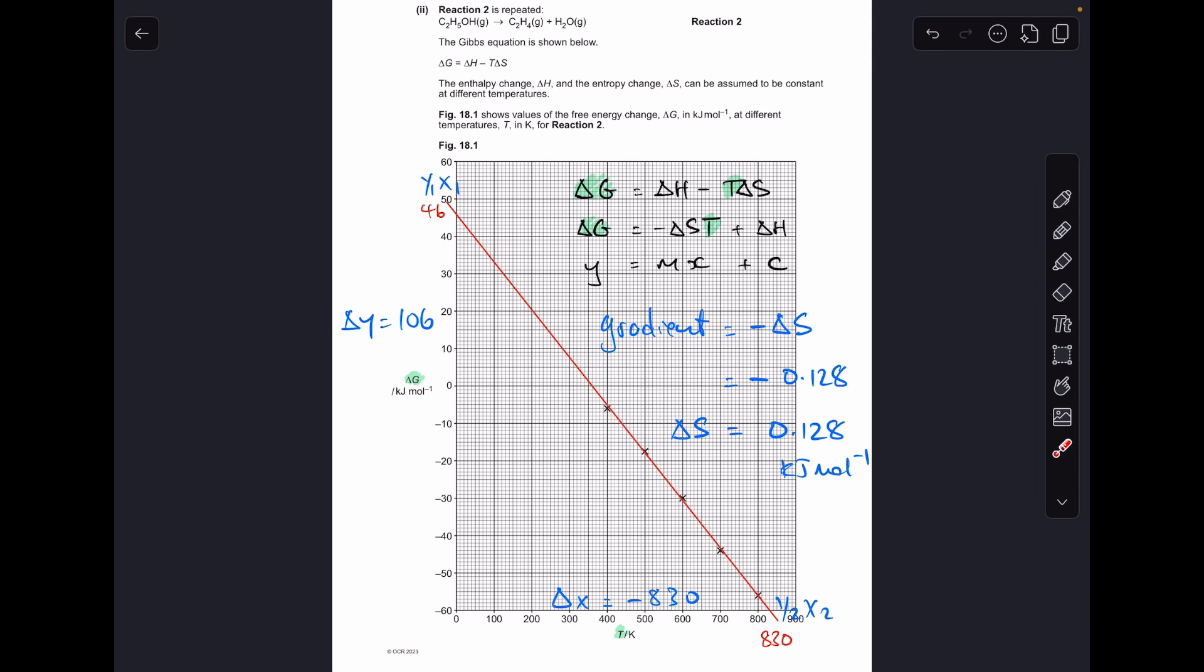Moving on to the minimum temperature where the reaction becomes feasible. So if you remember that's when delta G equals zero. So all we do is track along till we get to the graph and then drop down to the temperature axis, the X axis. So my answer would be minimum temperature of 360 Kelvin.